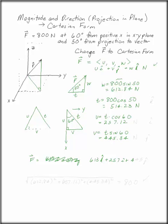613k plus 257i plus 445j. Now not only do you want to double check that you have, in fact, the i, j, and k components. This is i, this is j, and this is k.